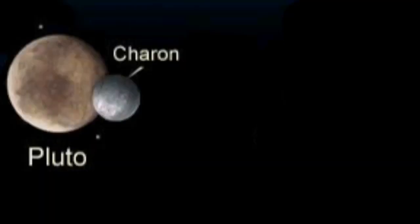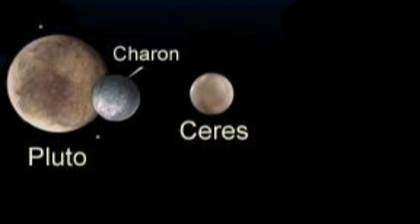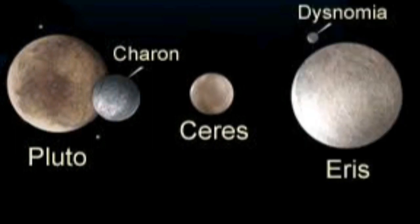By adding Charon, that is the moon of Pluto, being number 10, and Asteroid Ceres, being number 11, and Eris, being number 12.